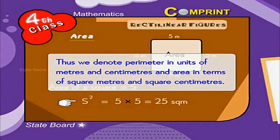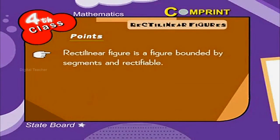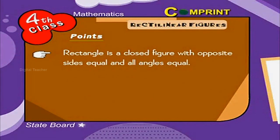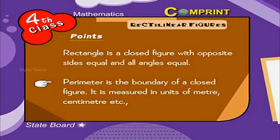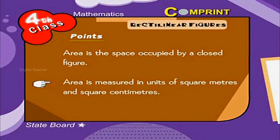We denote perimeter in units of meters and centimeters, and area in terms of square meters and square centimeters. Points to remember: A rectilinear figure is a figure bounded by segments and rectifiable. A square is a closed figure formed with all sides and angles equal. A rectangle is a closed figure with opposite sides equal and all angles equal. Perimeter is the boundary of a closed figure, measured in units of meters, centimeters, etc. Area is the space occupied by a closed figure, measured in square meters and square centimeters.